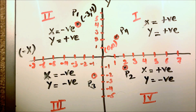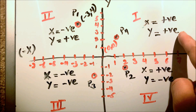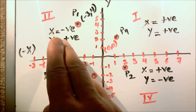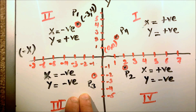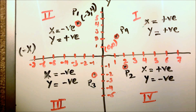It depends on the question: if asked to make a parallelogram or quadrilateral, we join the points; if asked to just mark the points, we write the coordinates. In the first quadrant, both x and y are positive. In the second quadrant, x is negative and y is positive. In the third quadrant, both x and y are negative. In the fourth quadrant, x is positive and y is negative. This is how we define the quadrants. Thanks for watching.